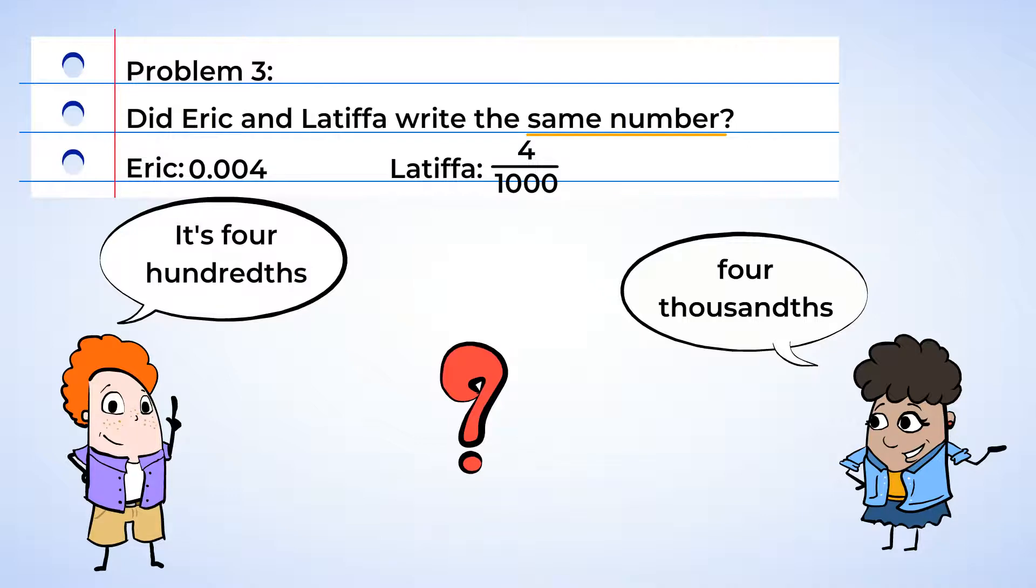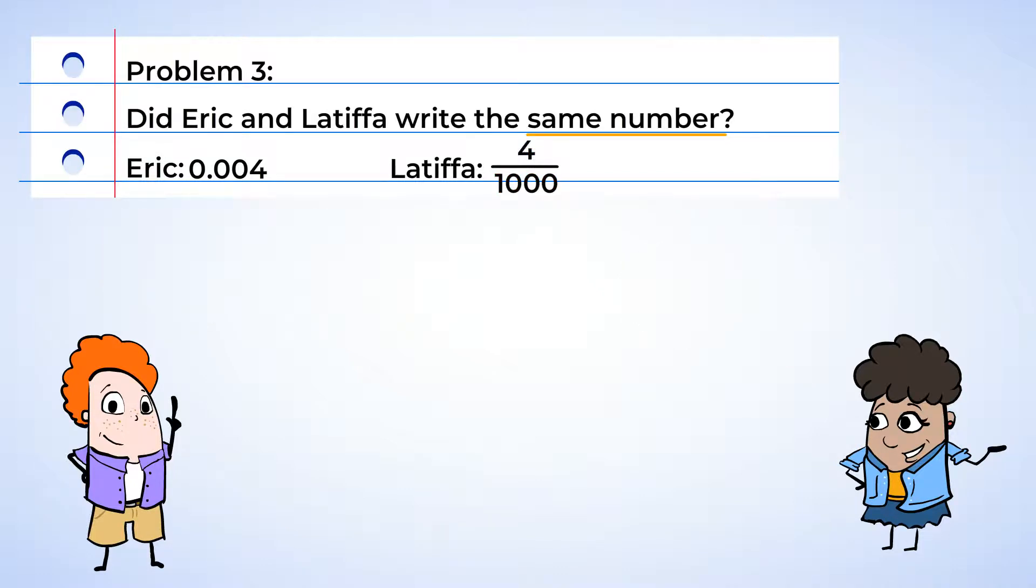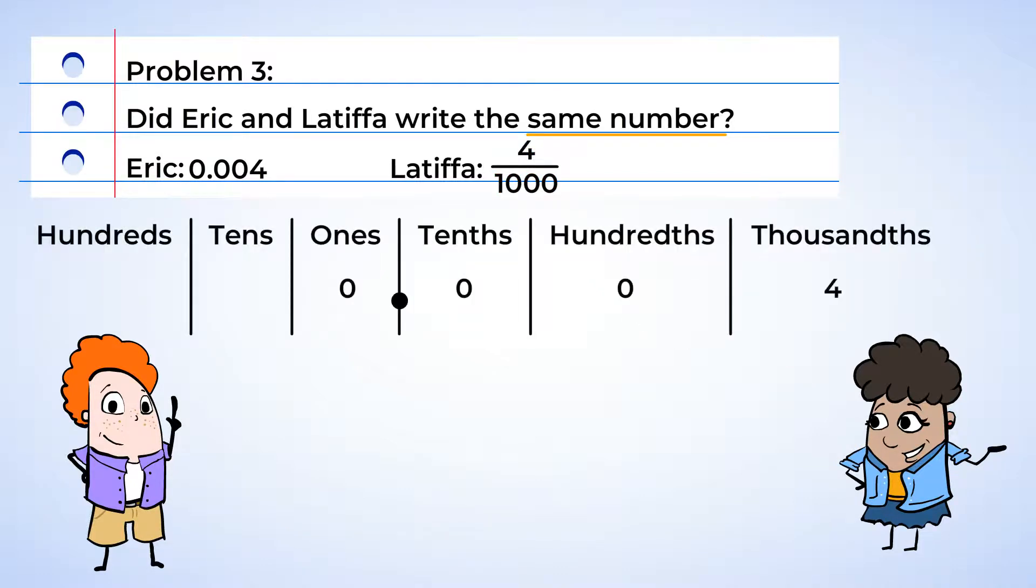Both Eric and Latifah say that Latifah wrote four thousandths. Since there is a four in the numerator and one thousandth in the denominator, Latifah's number is correct. And now let's take a look at Eric's number. If we place the number in a place value table, we can see that the four is in the thousandth place, not in the hundredth place as Eric thought. So Latifah is correct, and both numbers are four thousandths.